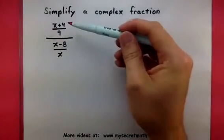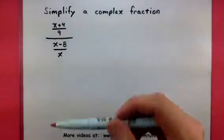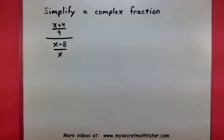So, let's think, what is the common denominator if I got a 9 and an x? Well, it looks like it's going to be 9x.